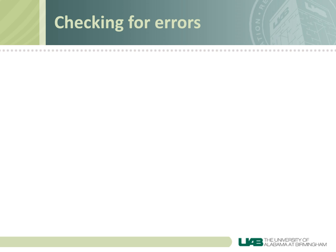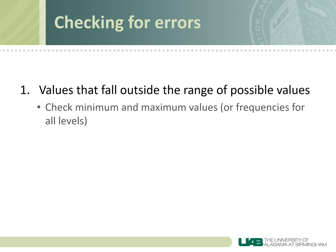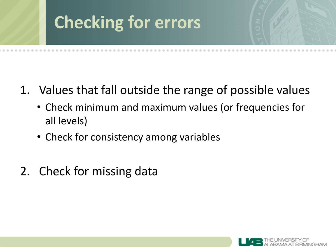When checking for errors, you are mainly doing two things: looking for values of variables that fall outside the range of possible values, and looking for missing data. You can use the statistical analysis package or your spreadsheet to do this. You want to look at minimum and maximum values for each variable and make sure that no results are outside of this. You could also look at frequency tables for each variable, or sort the variables from lowest to highest. Make sure there are no values outside the possible range, and reference your codebook to verify that all values fall within the range you defined.